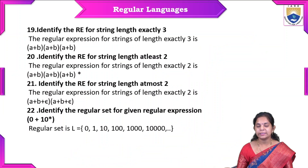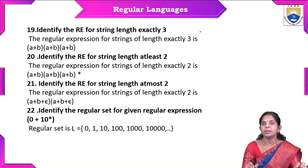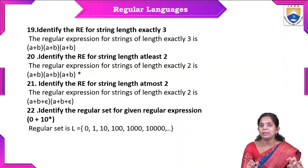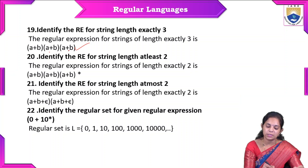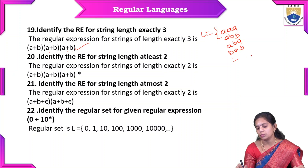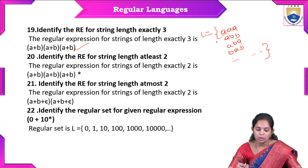Another example: length exactly 3. Similarly, each of the three positions can be either a or b, so the regular expression is (a+b)(a+b)(a+b). For example, strings like abb, aba, aab, and so on all have length 3.